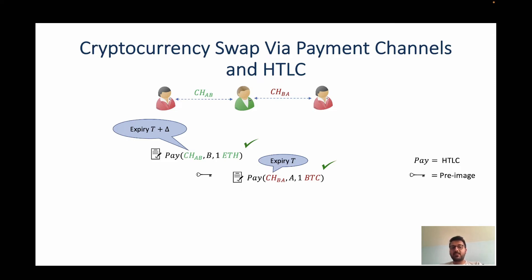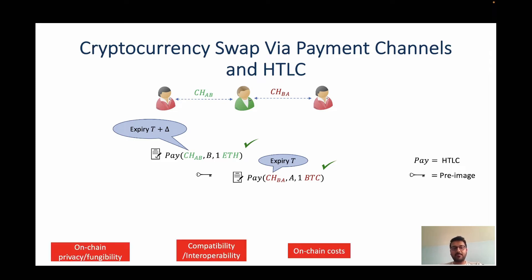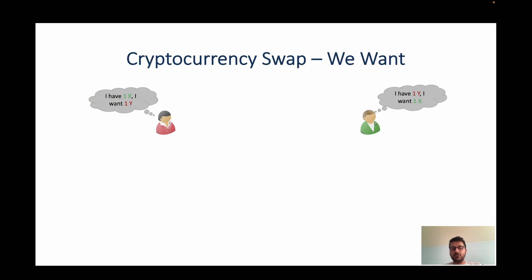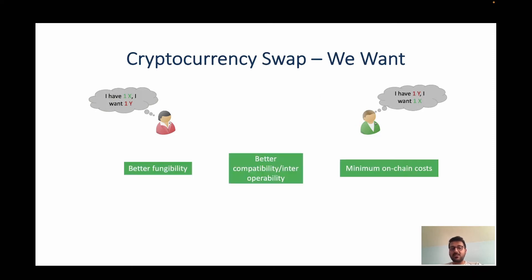But this solution requires the special HTLC script, which restricts interoperability as some currencies may not support it. Also, using the script results in high on-chain costs in the form of transaction fees and affects the fungibility of the tokens involved. Tokens in a currency are said to have high fungibility if all unit tokens are of the same value. What we want in a coin swap solution is that it preserves fungibility, is compatible with a wider class of currencies, and has low on-chain costs.